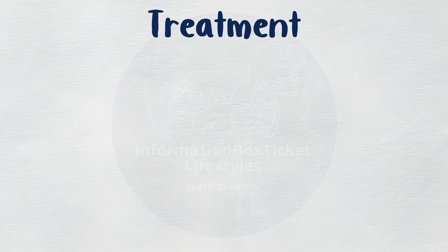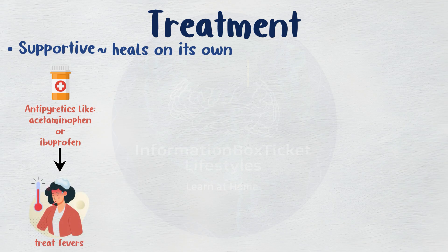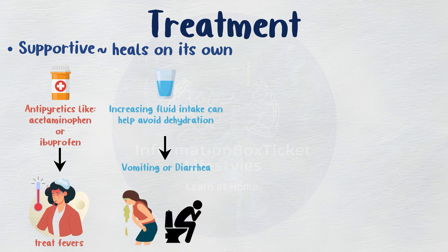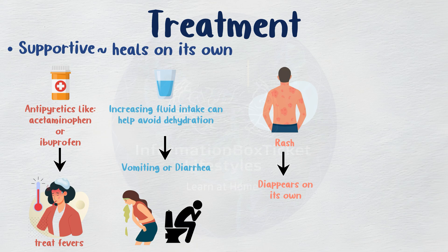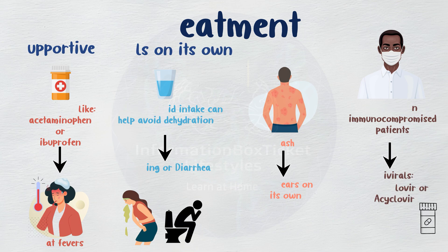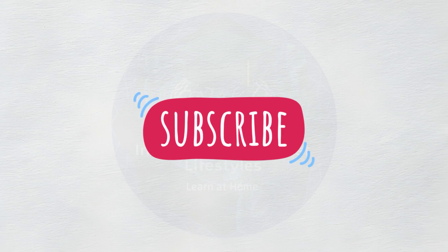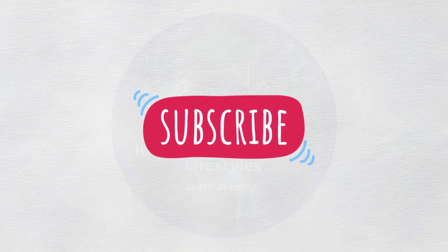Treatment for roseola is mainly supportive, as the condition tends to resolve on its own. Antipyretics like acetaminophen or ibuprofen can be used to treat fevers, and increasing fluid intake can help avoid dehydration in the event of vomiting or diarrhea. The rash disappears on its own. In severe cases, such as HHV-6 infection in immunocompromised patients, antivirals such as ganciclovir or acyclovir can be used.